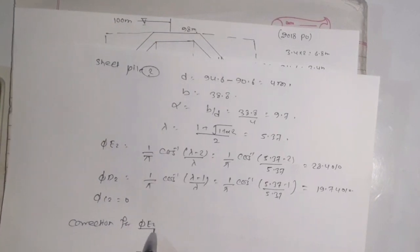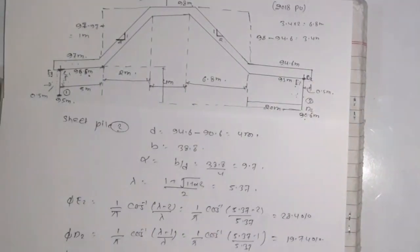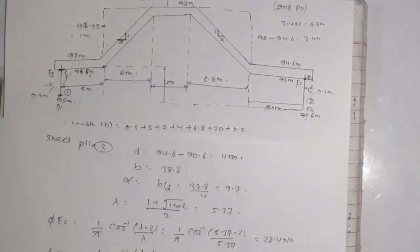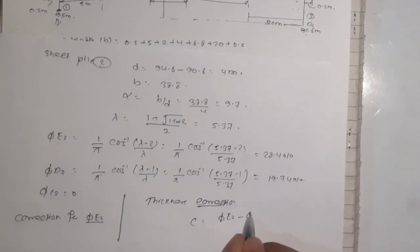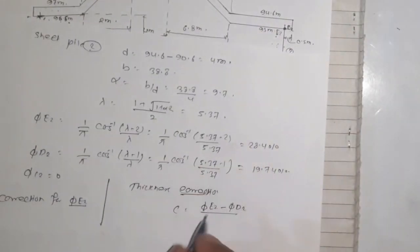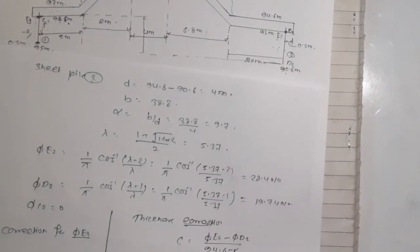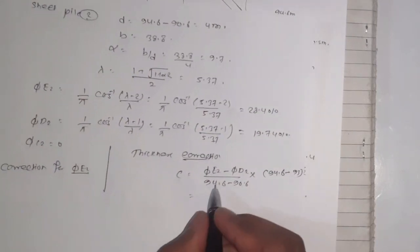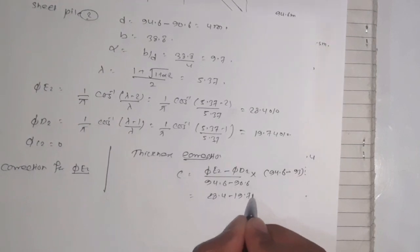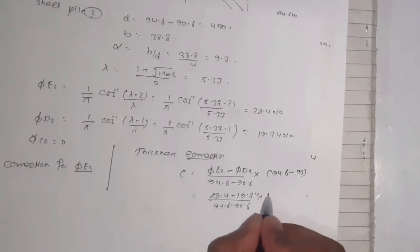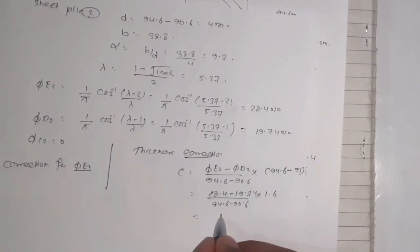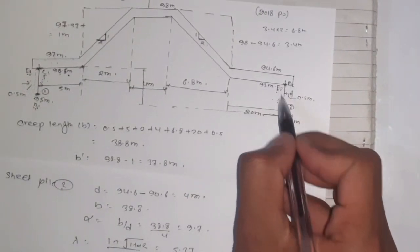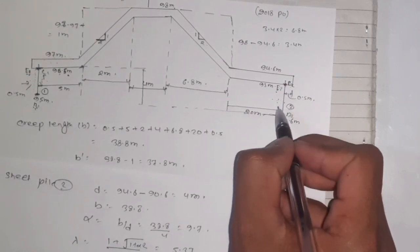Thickness correction for C2. The formula is phi E2 minus phi D2 upon overall depth into thickness. So 94.6 minus 90.6 into thickness, divided by 94.6 minus 93. So we get 2 into 28.4 minus 19.74, upon 94.6 minus 90.6 into 1.6. When you solve this, the value is 3.464 percent. The sign is negative.